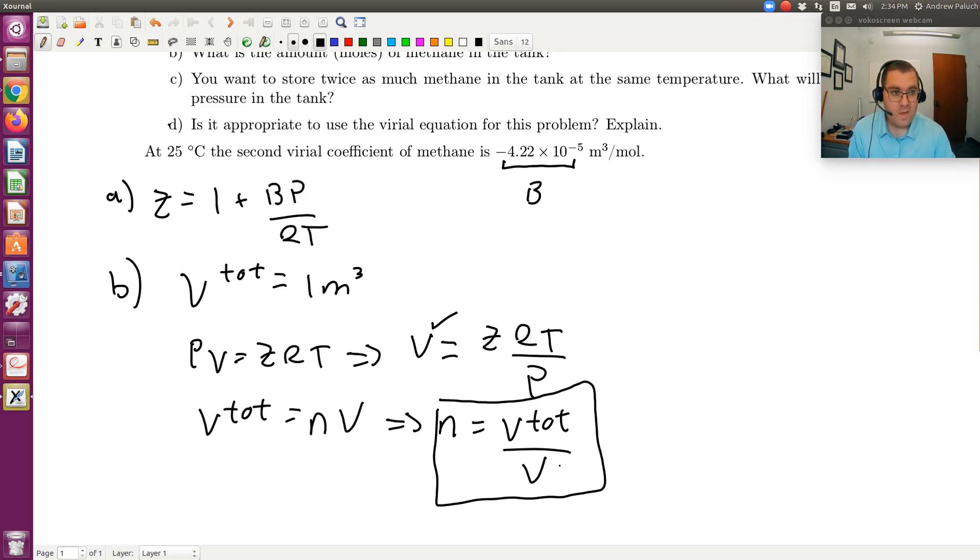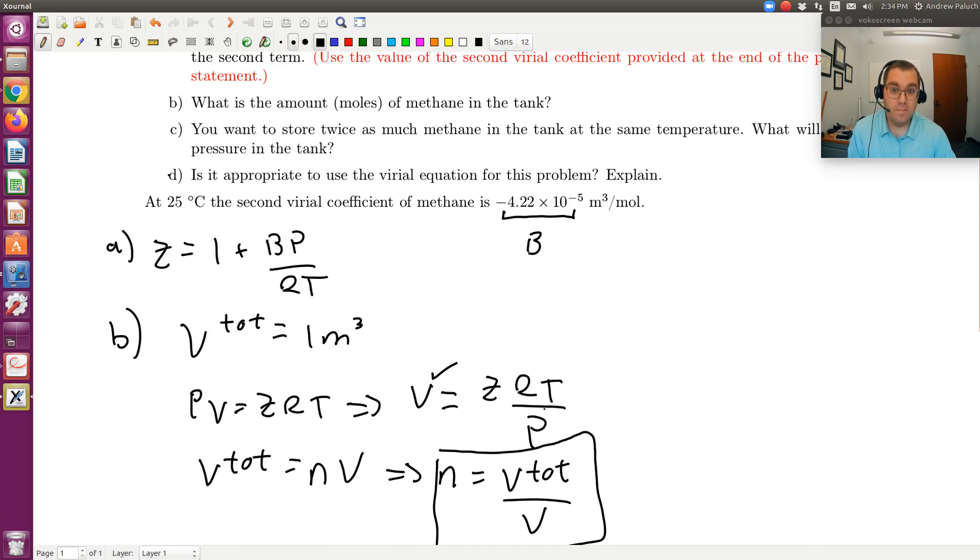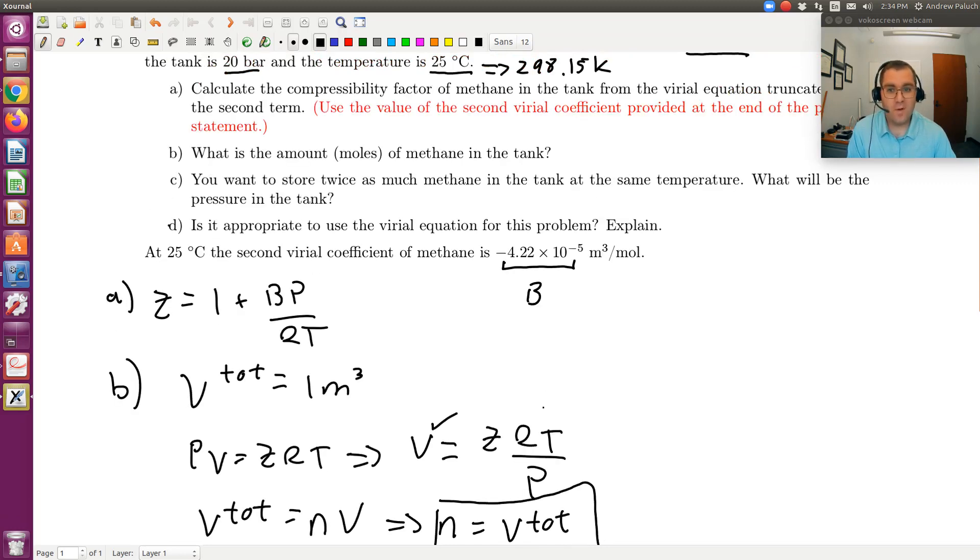Where V total is going to have units of volume, V will have volume per moles, so that will give us moles. So in terms of B, it's just solving for the molar volume using the equation of state for real fluids with the Z you solve for in A. And then knowing V total, we can get N.